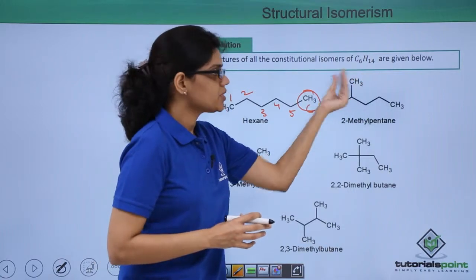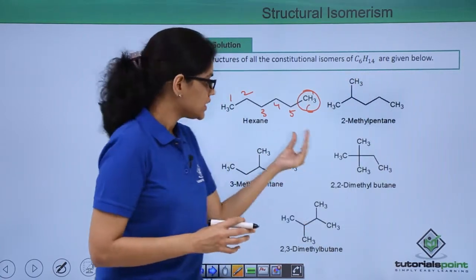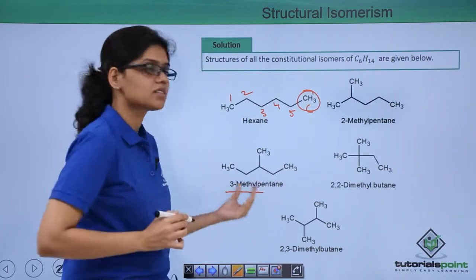Now if I change the position of this methyl group from the 2nd to 3rd carbon, then I end up getting a structure which is 3-methylpentane.